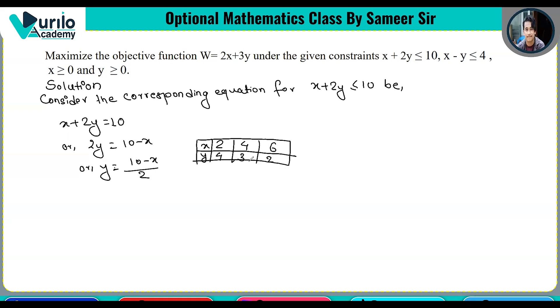For the next point, when x equals 6, we get 10 minus 6 which is 4, divided by 2 equals 2. So we have points (2,4), (4,3), and (6,2).